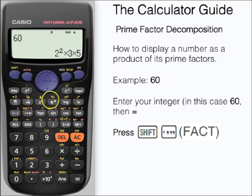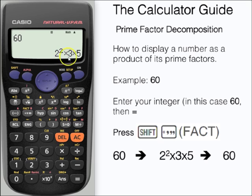Here we can see 60 displayed as a product of its prime factors: 2 squared times 3 times 5.